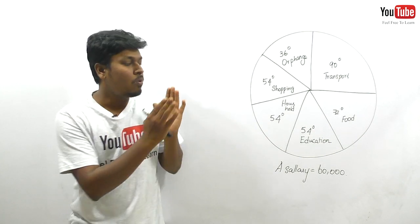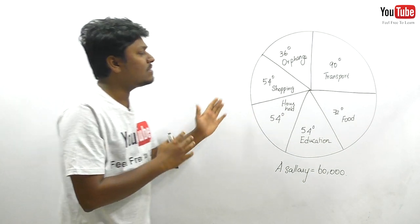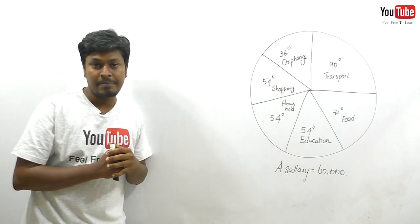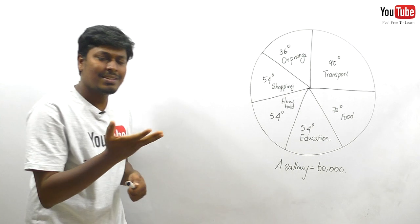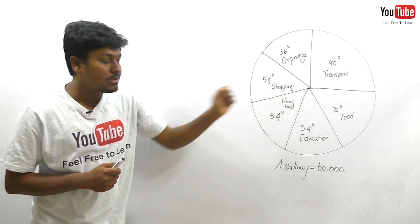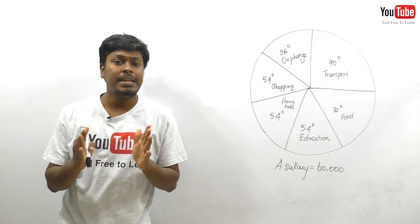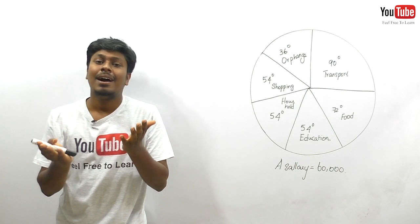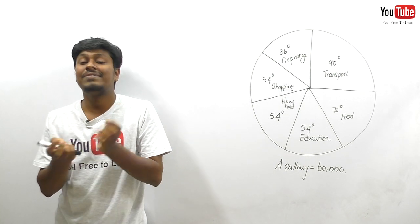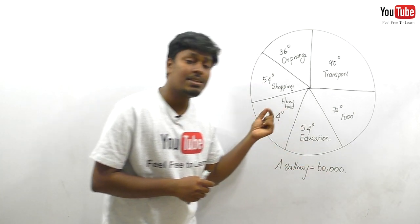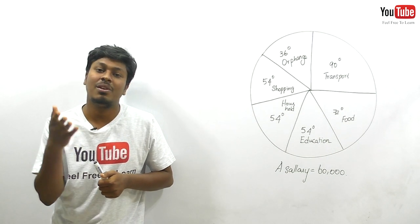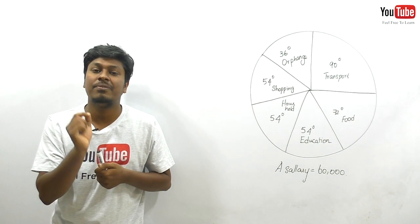Consider this example: a salary is 60,000 and spending is given in degrees. If food is 72 degrees and they ask you the amount spent on food, 70 to 80% of students use the formula: 72 ÷ 360 × 100 to convert to percentage, then calculate the amount from 60,000. This approach works but is not needed for a competitive exam — you need to be faster.